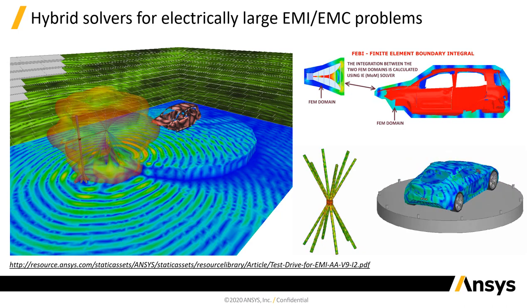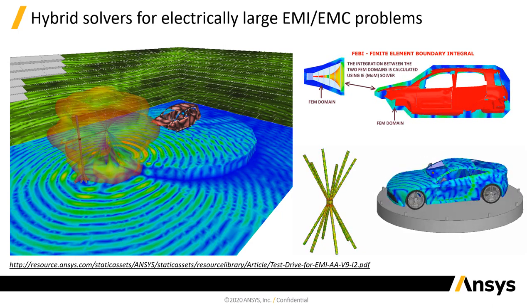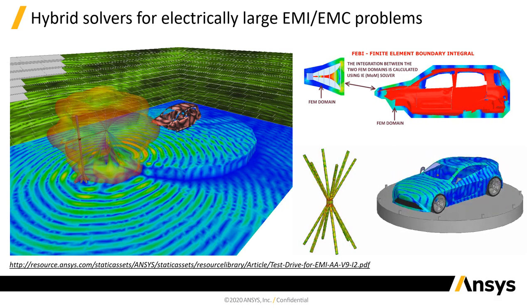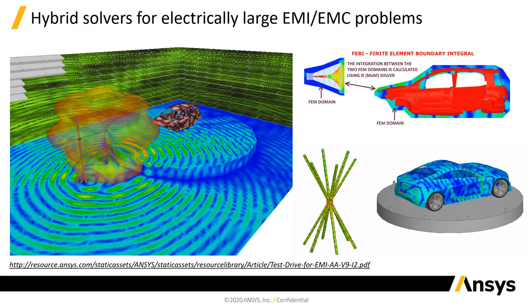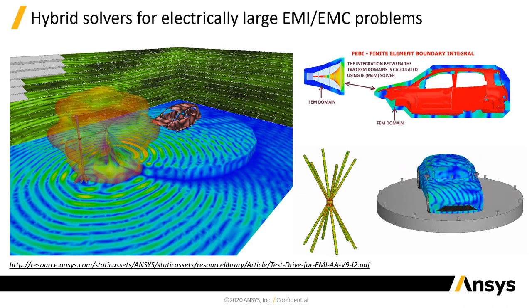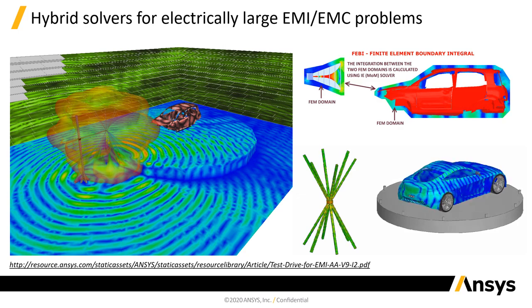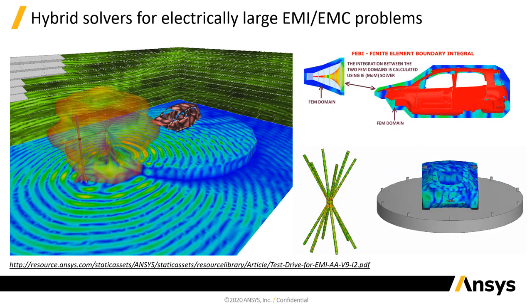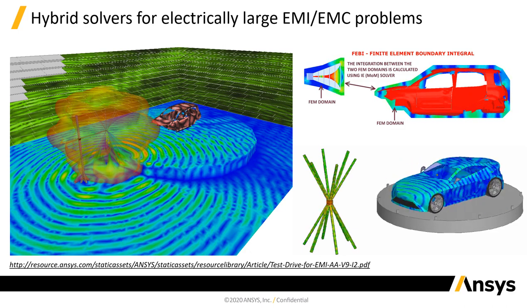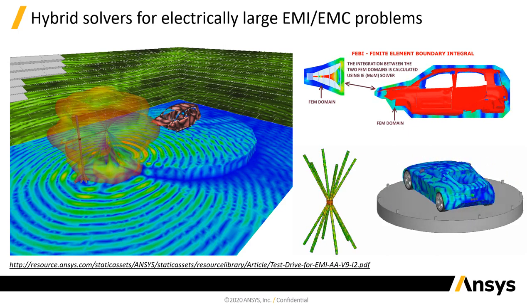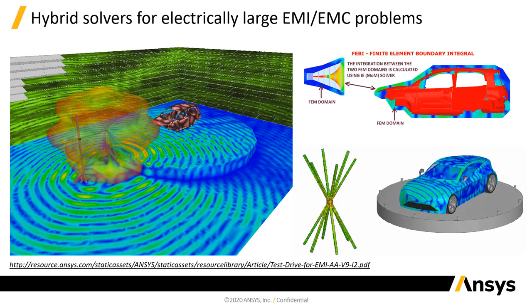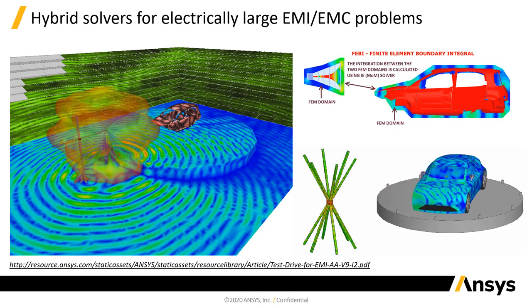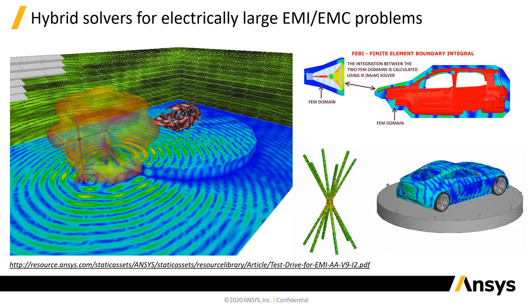Here we have an example of a radiated immunity test from one of our partners, published on ANSYS Advantage. An antenna generates noise, and you need to first measure the electric field inside your vehicle and then make sure all electronic components behave as expected. On the left side we are simulating the full chamber and antenna. We can use hybrid technology like FEBI — Finite Element Boundary Integral — where we eliminate all the air volume around the antenna and the vehicle, fully coupling the separated domains through the method of moments.